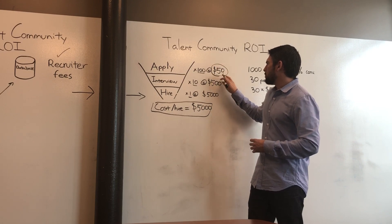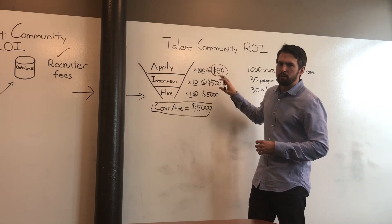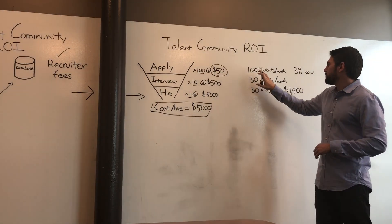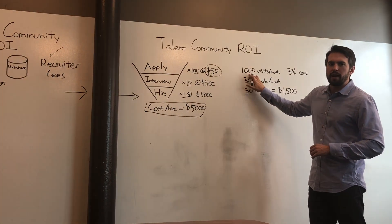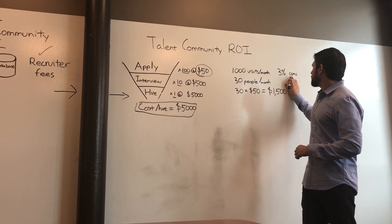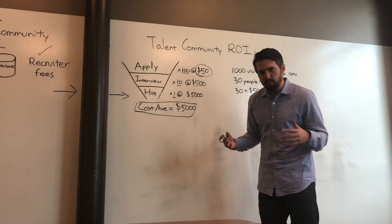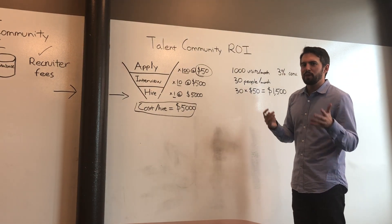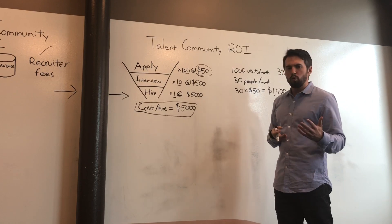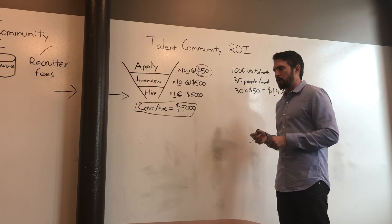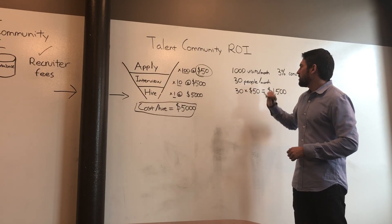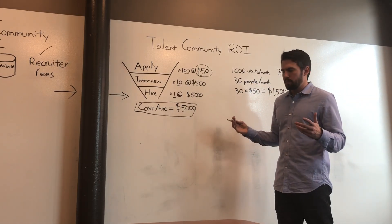Let's table that $50 number for two seconds and think about your career site. Let's say hypothetically you get 1,000 visitors per month. If you're doing a good job, you get about a 3% conversion rate into your talent community. So for every 1,000 people that go to your career site, 3% are like, hey, this is cool, I'm not ready to apply in the ATS, I'm going to be part of the talent community. So 1,000 times 3% is 30 people per month in our talent community.